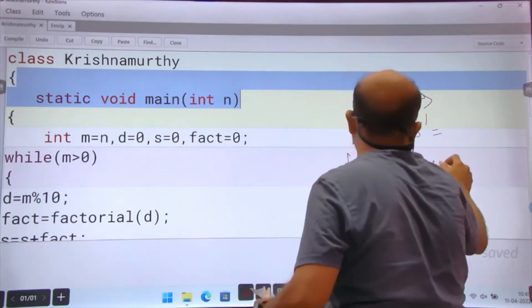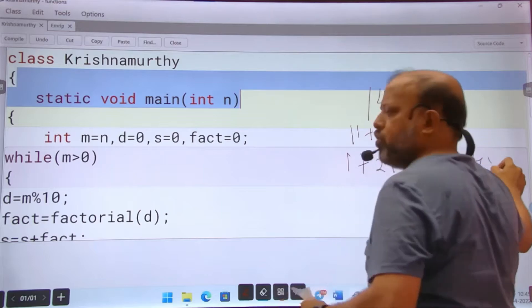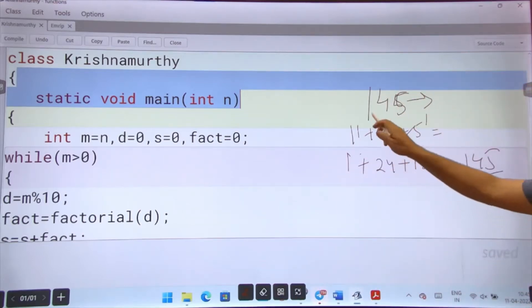This is Krishna Murthy number - the sum of factorial of each digit.